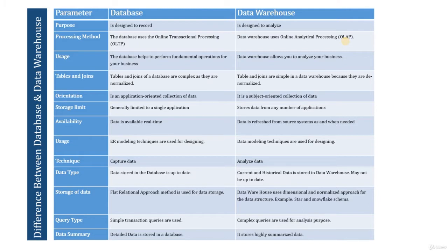In data warehouse, denormalization is a strategy used on a previously normalized database to increase computing performance. Denormalization is the process of improving read performance of a database at the expense of some write performance, by adding redundant copies of data or grouping data. Since data accessed through the data warehouse is read-heavy, denormalization makes sense for data warehouse tables.